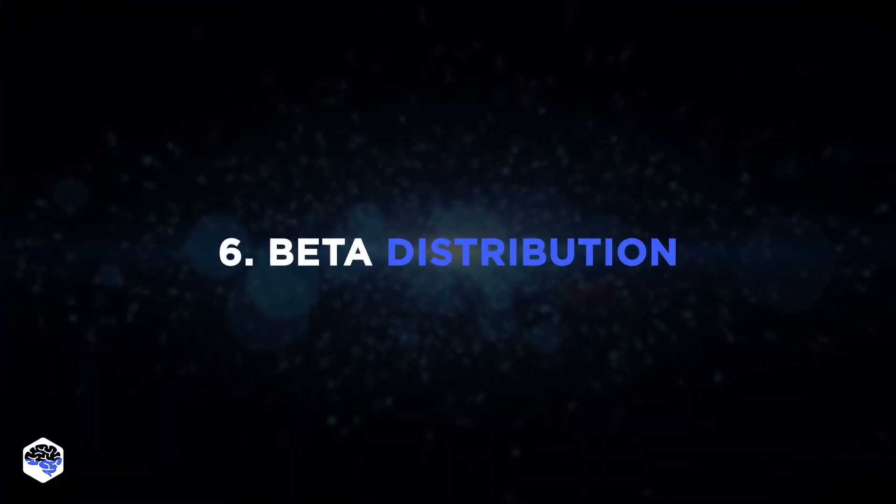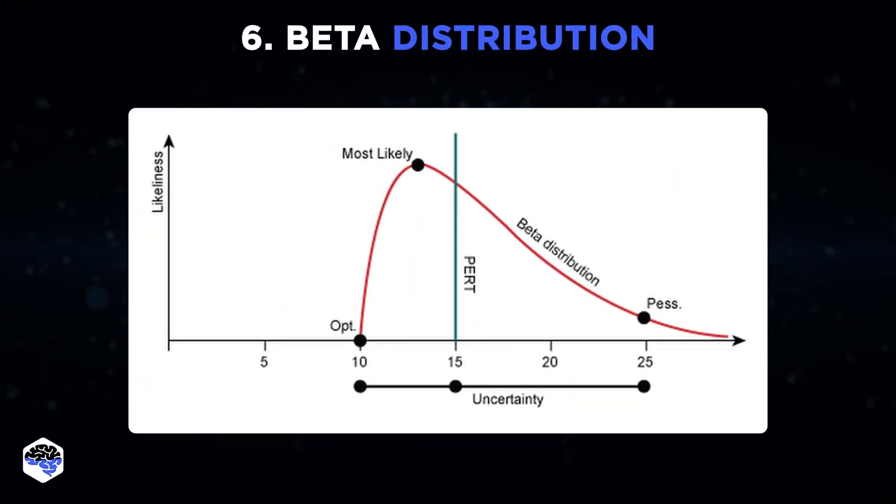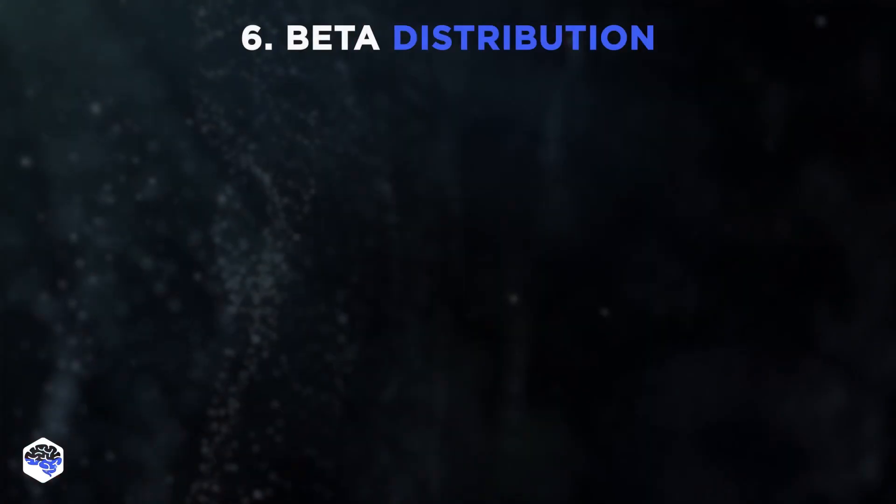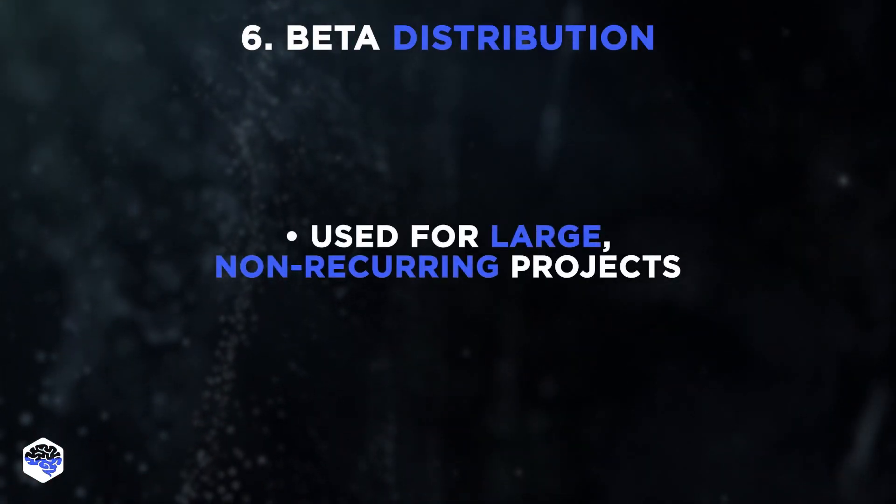The sixth method is a Beta Distribution. This method takes a weighted average of three values. It's mainly used for large, non-recurring projects.